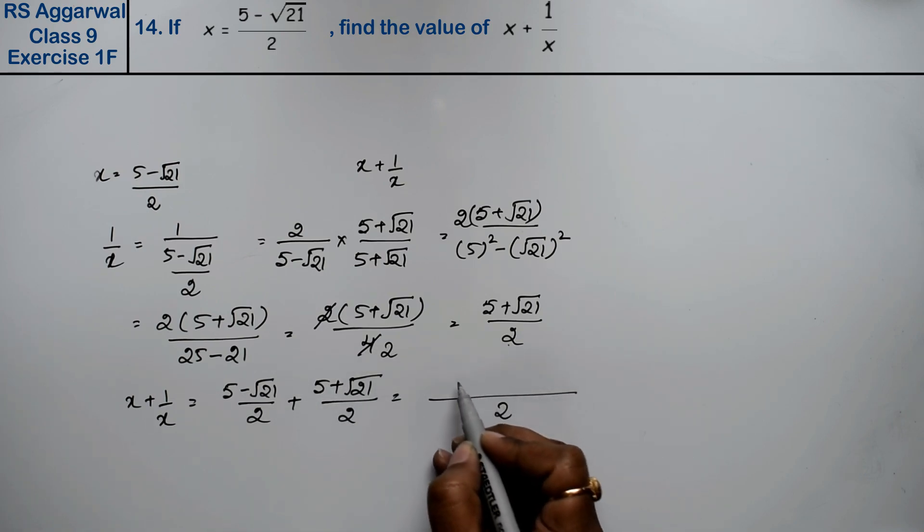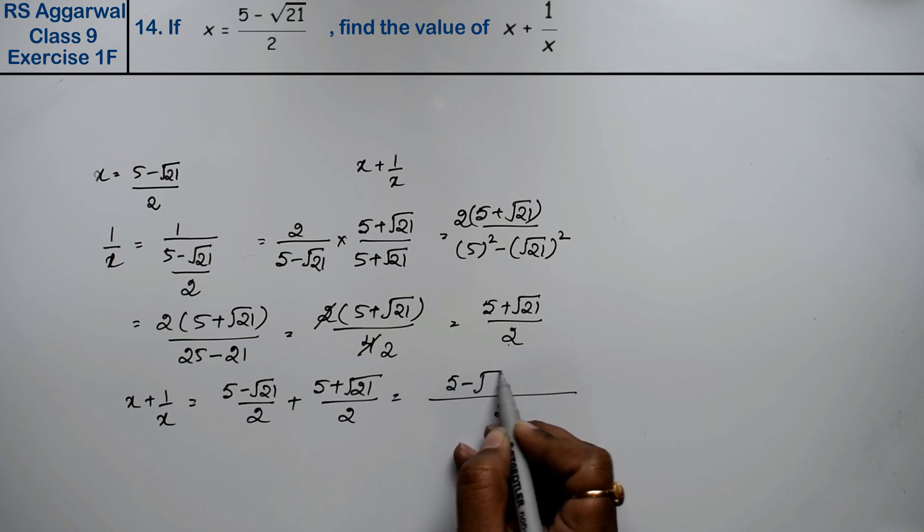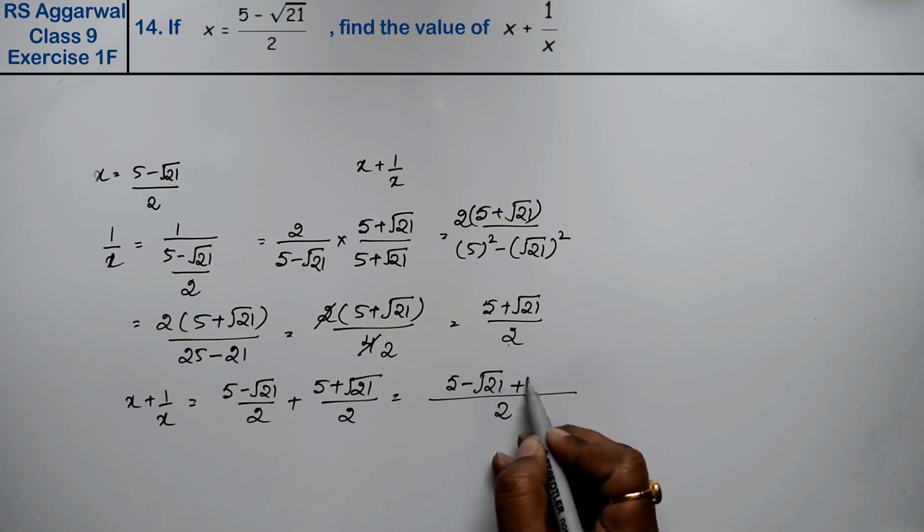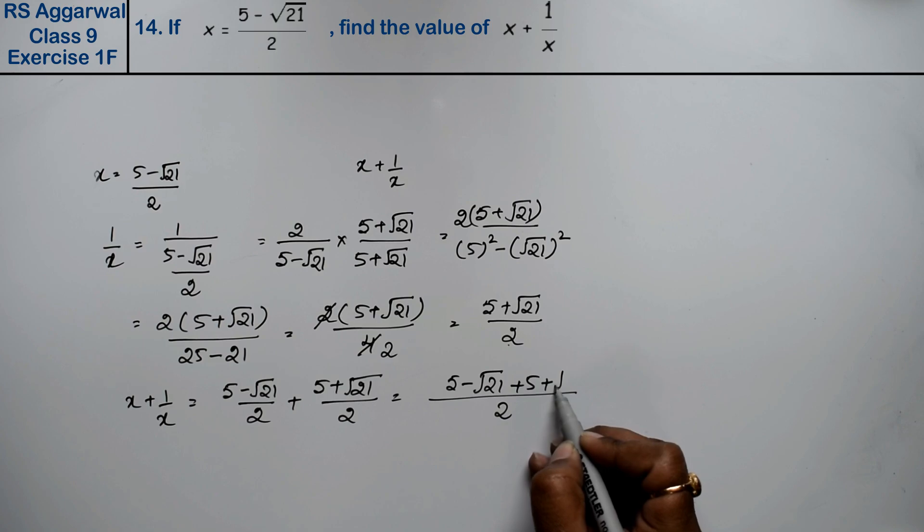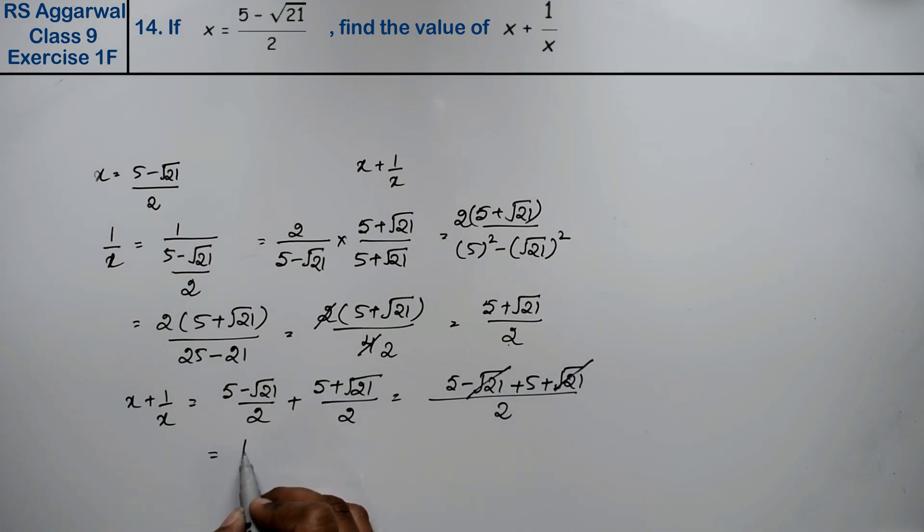Notice that x = (5 - √21)/2 and 1/x = (5 + √21)/2. When we add them, x + 1/x, the plus and minus √21 cancel. So 5 + 5 = 10, divided by 2 equals 5. The answer is 5.